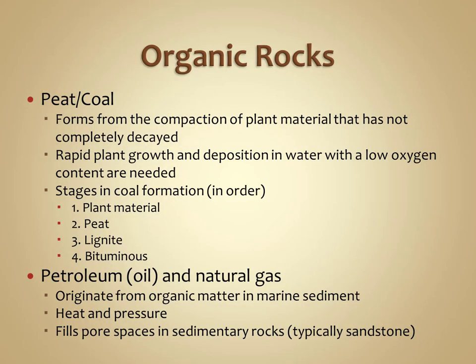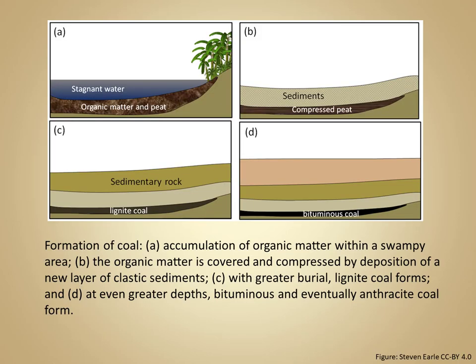The last type of sedimentary rock are known as organic rocks. Organic rocks form from organic material that has been deposited, buried, and then preserved. This includes plant material but can also include other organic material typically found in marine sediment. The most common type of organic rock is coal. Coal forms when a lot of organic or plant material is being rapidly deposited and buried before it can decay.